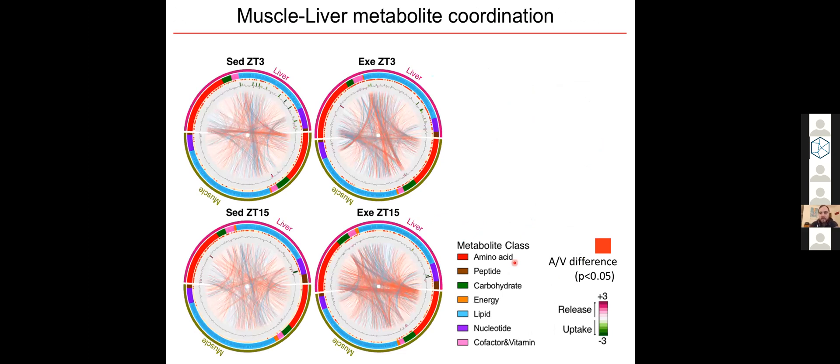When we put and combine all our data together, we can integrate the tissue metabolite levels with this net uptake and release of the same metabolites and reconstruct more comprehensively this dynamic metabolite exchanges between tissues, in this case, the liver and the muscle.